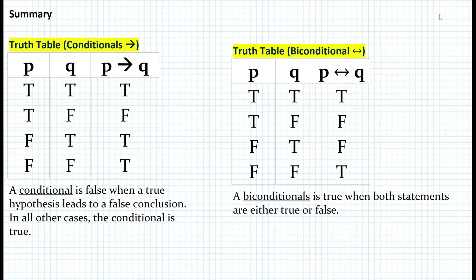Here's a summary of today's lesson. Conditional statements are false when a true hypothesis leads to a false conclusion; in all other cases, the conditional is true. For biconditionals, a biconditional is true when both statements are either true or false. Thank you for watching. If you have any questions or comments, please post a comment to the YouTube video. Don't forget to subscribe and hit the like button. Have a wonderful day.